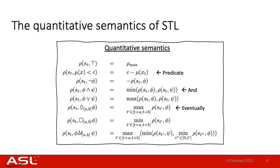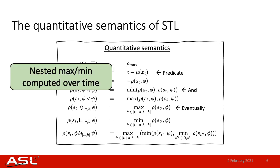Looking at the AND operation, since we want both phi and psi to be true, we want to see which is the least true. This corresponds to taking the minimum between the robustness value of phi and the robustness value of psi. Looking at the eventually operator, it specifies that the formula phi should be true at least once between the time interval [a, b]. Naturally, this corresponds to finding the maximum robustness value of phi over the time interval [a, b]. For an arbitrarily complex STL specification, the corresponding robustness formula will be composed of a lot of nested maxes and mins, both in space and in time.